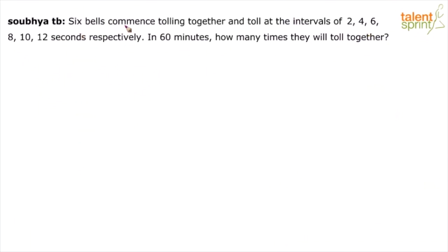We have six bells — tolling here is nothing but ringing. They ring at intervals of 2, 4, 6, 8, 10 and 12 seconds respectively. The first bell will ring after every two seconds.